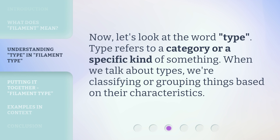Now, let's look at the word 'type.' Type refers to a category or a specific kind of something. When we talk about types, we're classifying or grouping things based on their characteristics.